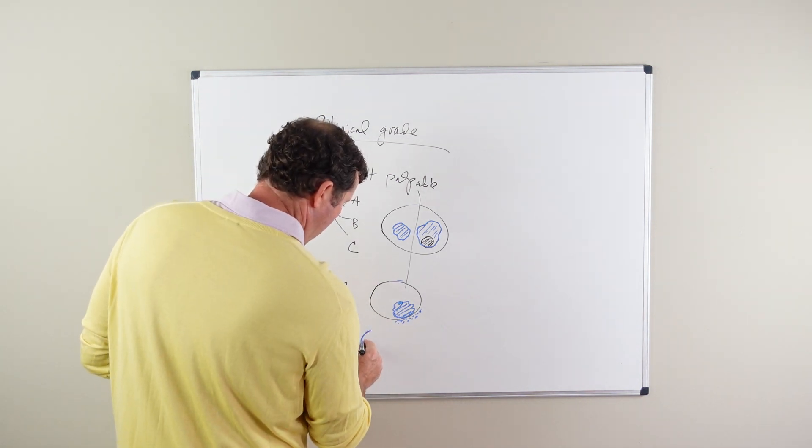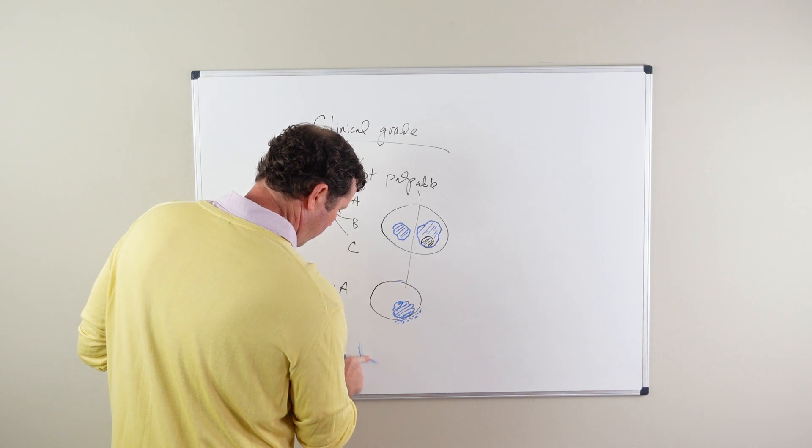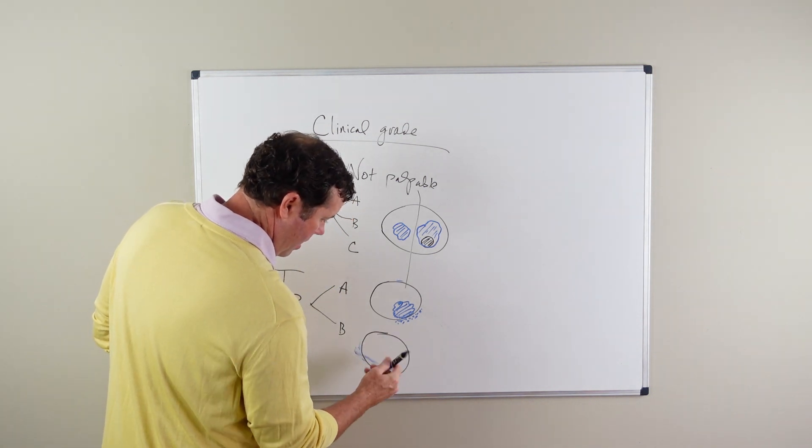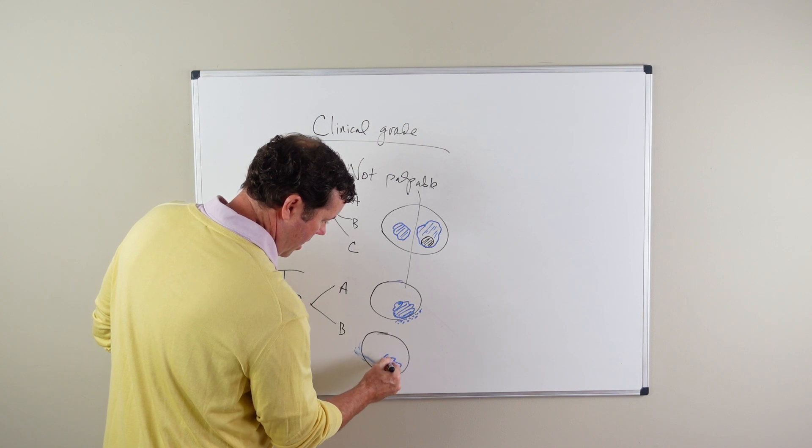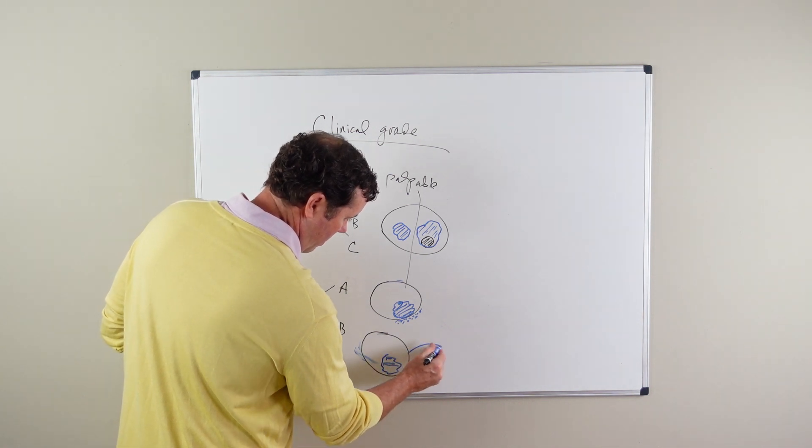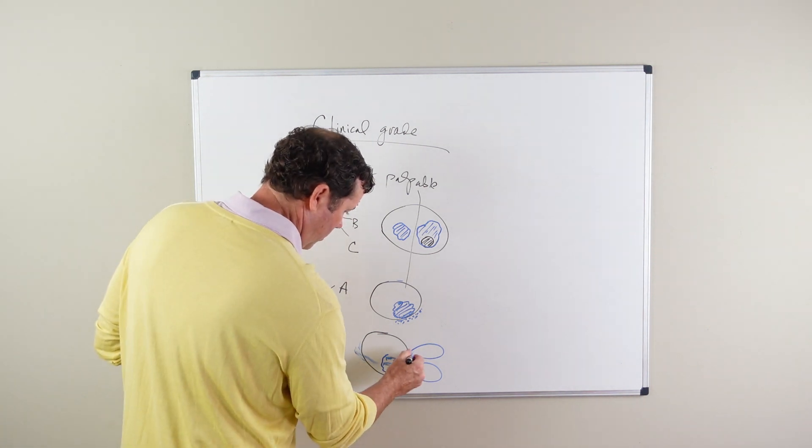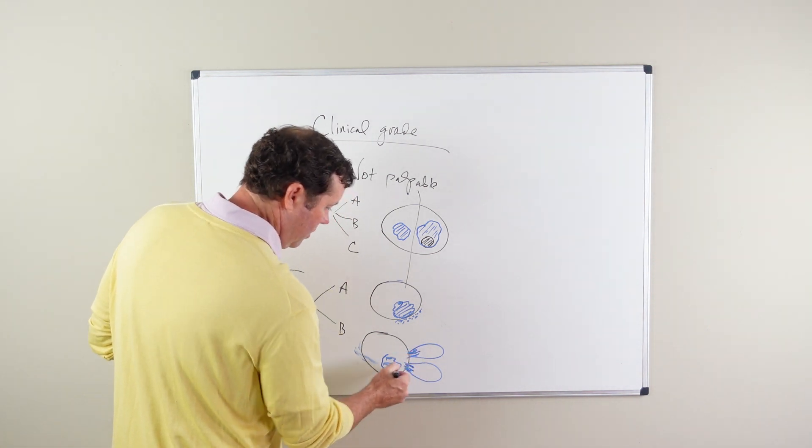And then T3B is cancer in the prostate that involves these seminal vesicles on the back side of the prostate. So cancer is palpable in these seminal vesicles.